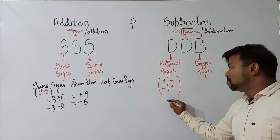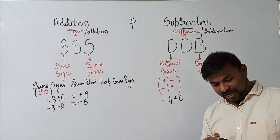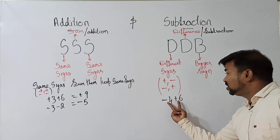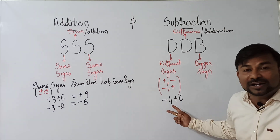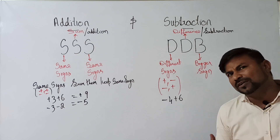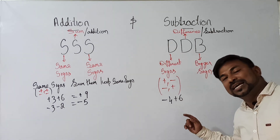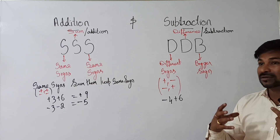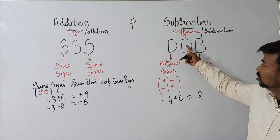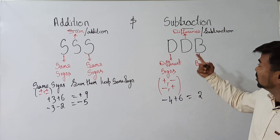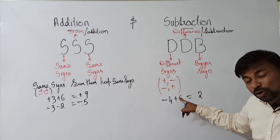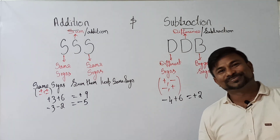Let us take an example: minus 4, plus 6. Check it out — are we having same signs like minus-minus or plus-plus? No, they are different: minus and plus. So if they are having different signs, what to do? Find the difference — the second D. Difference means take away the smaller number from the bigger number. If you take away 4 from 6, it is 2. Now the third step: bigger number sign. Which is bigger? Six. What is the sign of 6? Plus. Therefore it is plus 2.